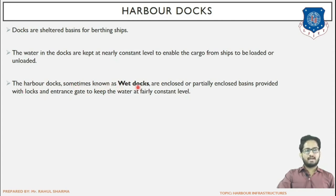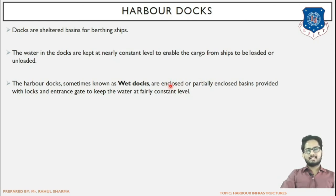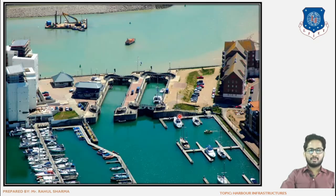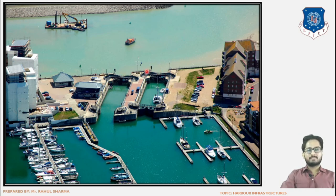Harbor docks, also known as wet docks, are enclosed or partially enclosed basins — generally fully enclosed on three sides by walls of timber or concrete construction, with lock gates on one side. They are fully enclosed areas provided with gate arrangements to keep water at a fairly constant level. This is the most important distinguishing feature of wet docks — the arrangement of lock gates.